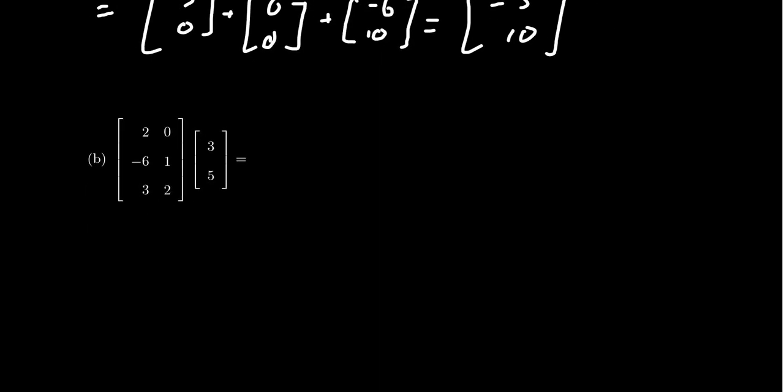Here's another example. This time we're going to have a 3 by 2 matrix times a vector from R^2. Again, we have two column vectors, so we're going to get a linear combination using these two entries right here.